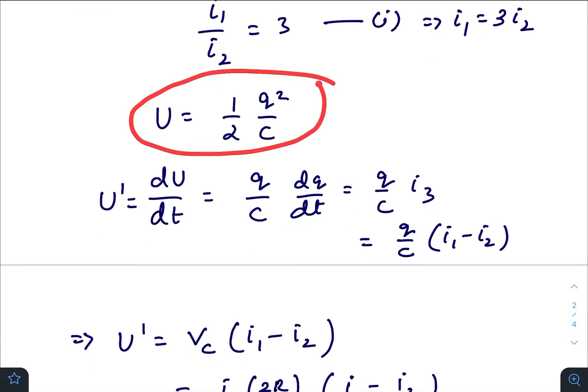Energy stored in the capacitor at that instant is U = Q²/2C. The rate of increase of energy is U' = dU/dt. Differentiating, we get (Q/C)(dQ/dt), and dQ/dt is I₃, which is I₁ - I₂.